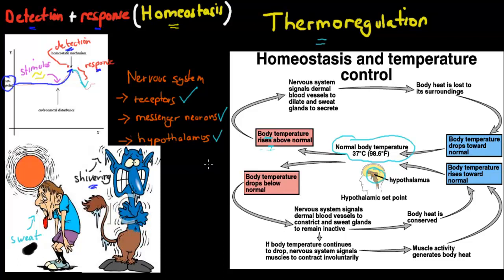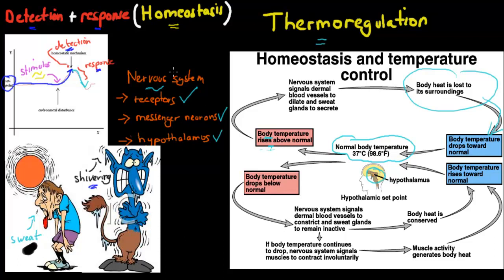The hypothalamus sends a signal on to the effectors — the ones that make the response happen. In this case, it sends that signal to the sweat glands and the blood vessels. The blood vessels will dilate and the sweat glands will produce sweat. That's the response, and all of this is done to make sure we lose more body heat and bring our temperature back down. The receptors, messenger neurons, and hypothalamus are all part of the nervous system, showing how important the nervous system is in this whole mechanism.